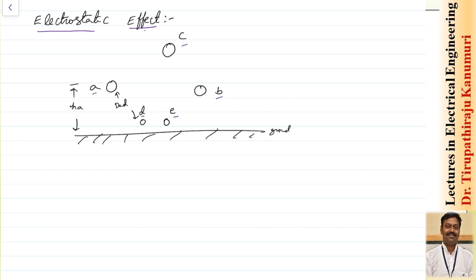In the method of images, whatever is the value on the top, we assume one more image existing below which has the opposite polarity of the charge passing on the top. That means D and E can be represented by D dash and E dash with respect to the ground, having the same distance.